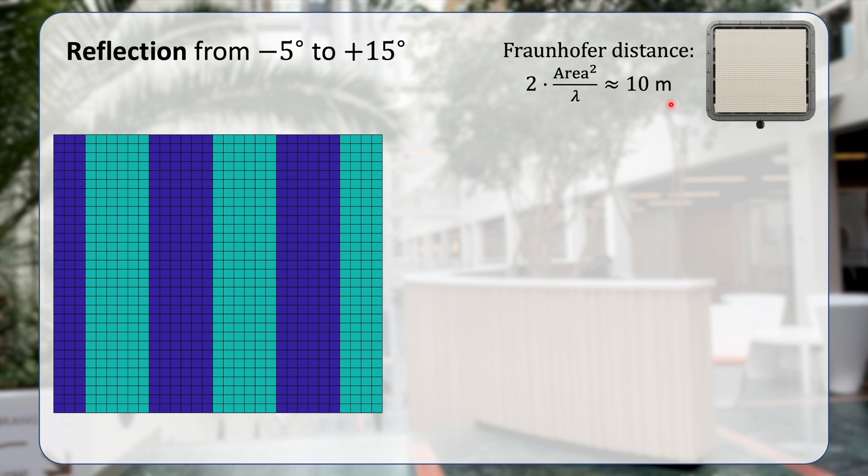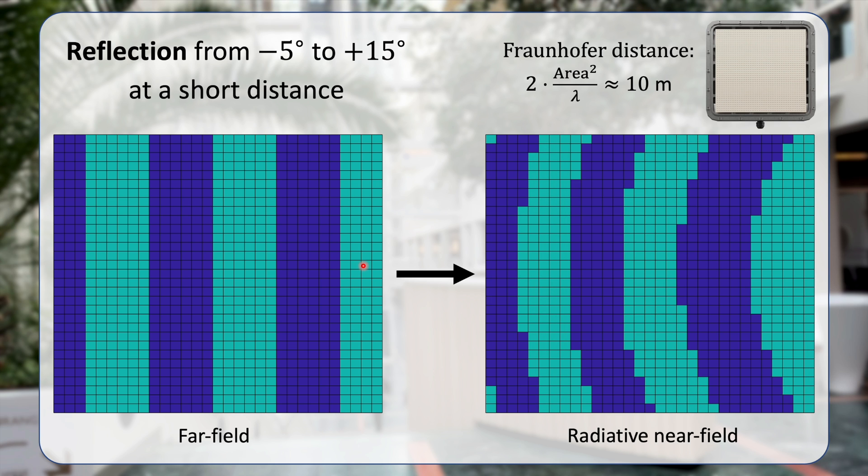So if we are doing an indoor experiment with the RIS, we will be in the radiative near field. With the far field transmitter, the RIS can configure itself like this in order to reflect the signal from minus 5 degrees to plus 15 degrees in the horizontal plane. But when the transmitter is at a short distance, we need something looking more like this, where you can see the spherical curvature.